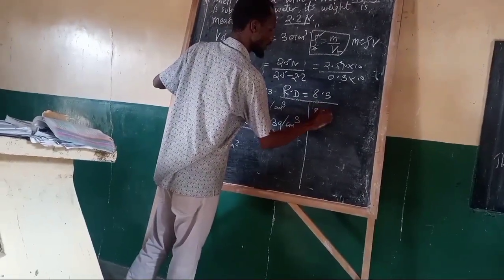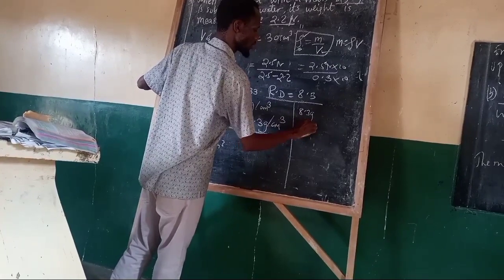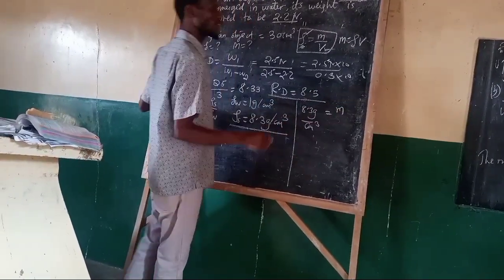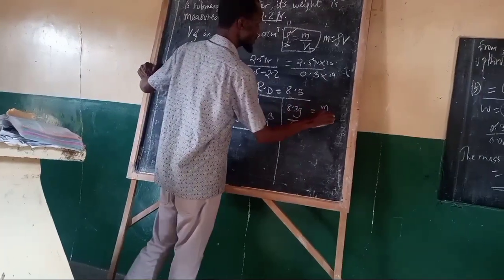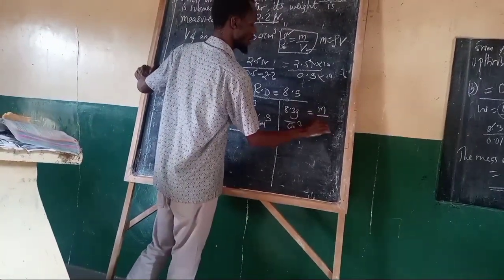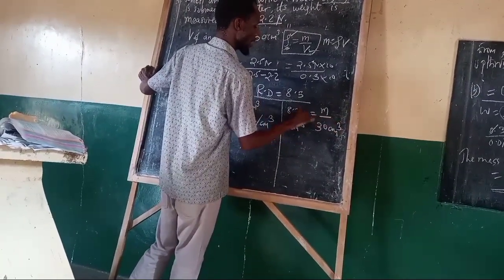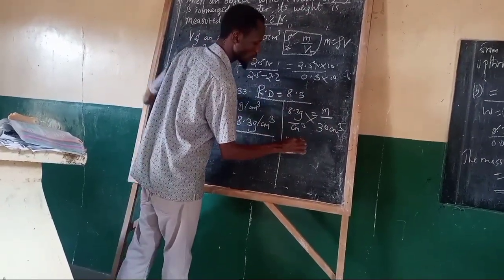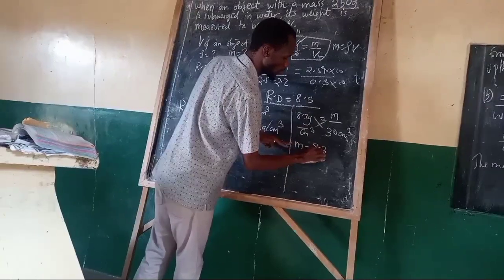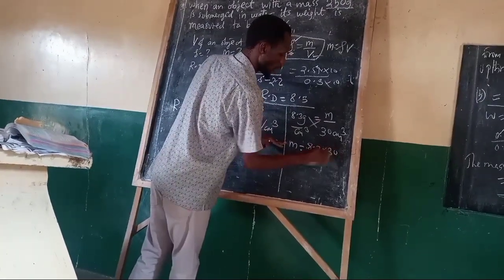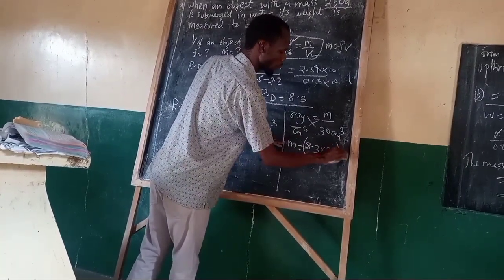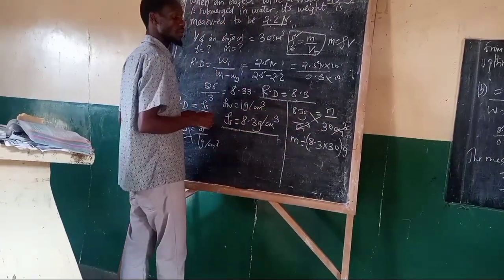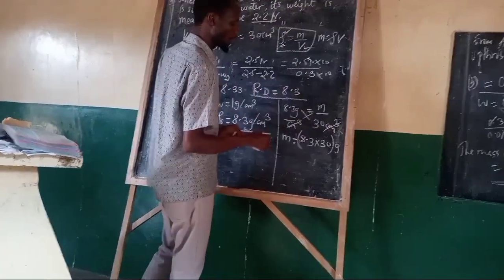Using relative density, we know that relative density equals density of substance over density of water. Density of water is 1 gram per centimeter cubed. Therefore, 8.3 equals density of substance over 1 gram per centimeter cubed. By cross multiplication, density of substance equals 8.3 gram per centimeter cubed. Now we have density equals 8.3 g/cm³ and volume equals 30 cm³, so mass equals density times volume: 8.3 times 30, which equals 249 grams, approximately 250 grams.